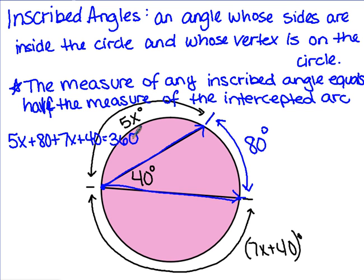If we combine like terms 5x and 7x is 12x, 80 and 40 is 120. We can subtract 120 from both sides. We get 12x is equal to 240.